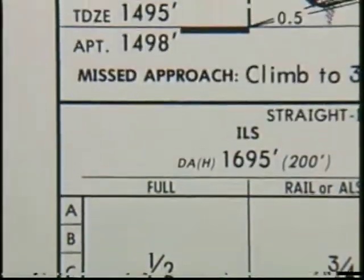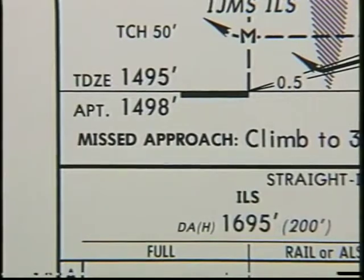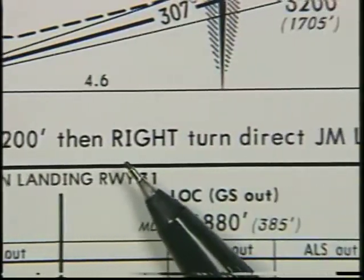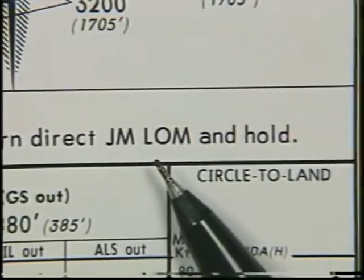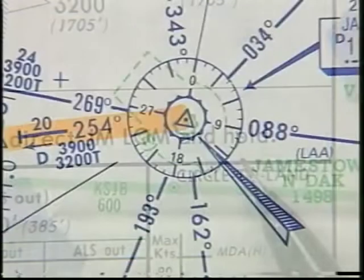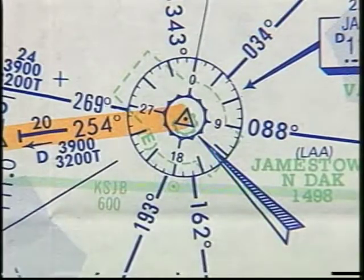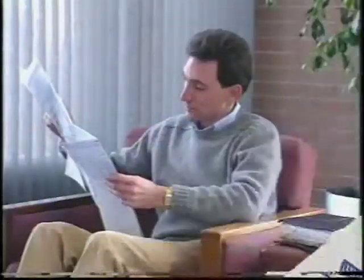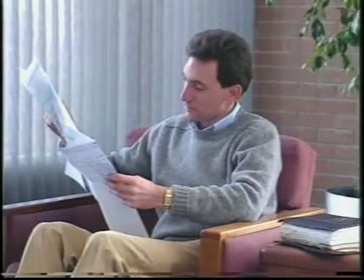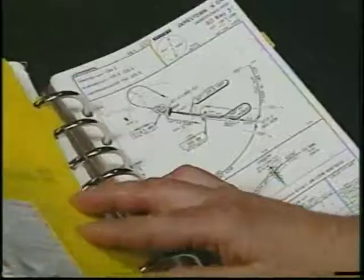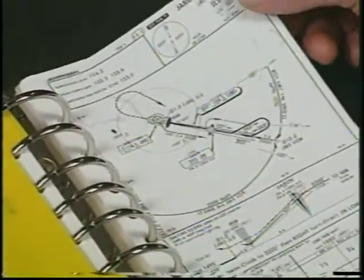If you don't have the runway environment in sight at that time, you'll perform a missed approach: climb to 3,200 feet, then make a right turn and proceed direct to the Sabin LOM and hold. Then, depending on the weather conditions, you'll either request another approach or request a clearance to your alternate. You might also want to look at the other approaches at Jamestown to see if there's anything unusual which might cause you a problem. By visualizing the flight before you actually get in the airplane, you've formulated a plan of action, which should make the flight easier, safer, and less stressful.